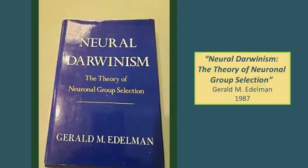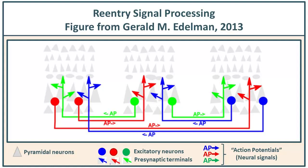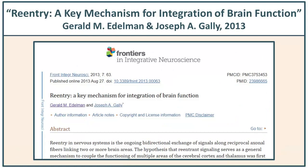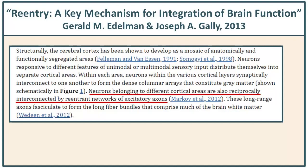This is an important element of Edelman's work, but also the notion of re-entrant signal processing is very compelling if we're going to be developing AGI. Re-entrant signals are a means by which, after you activate one neuronal area, it then sends signals back to the original area that provided the activation as well as others. Re-entrant signal processing isn't how we do our nearest-neighbor and next-nearest-neighbor neural interconnections. Rather, it's a long-range means of connecting different neural groups, such as cortical domains. As Edelman expressed it in a paper co-written with Joseph Galli in 2013: neurons belonging to different cortical areas are also reciprocally interconnected by re-entrant networks of excitatory neurons.